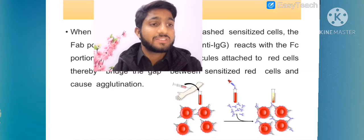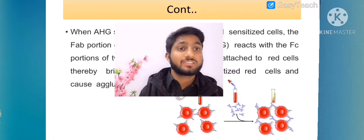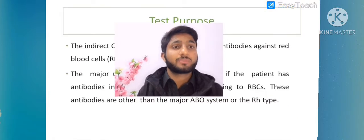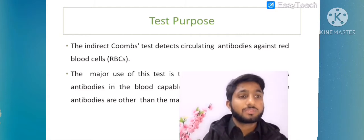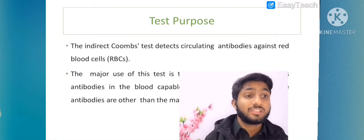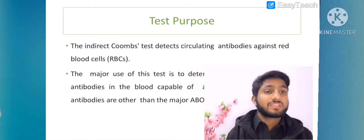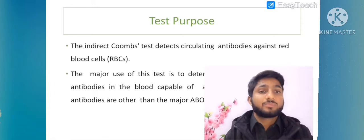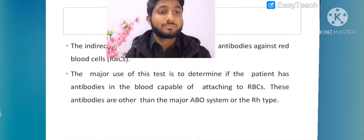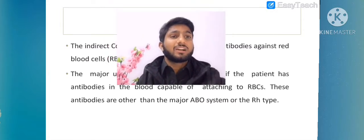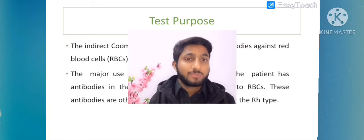You can see that these RBCs will be agglutinated. This is the working principle of anti-AHG. Now, why do we perform anti-AHG testing? The indirect Coombs test detects circulating antibodies against red blood cells. The major use of this test is to determine if the patient has antibodies in blood capable of attaching to RBCs - autoantibodies and alloantibodies.